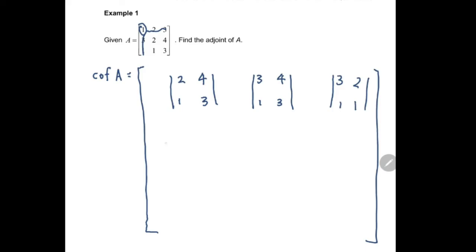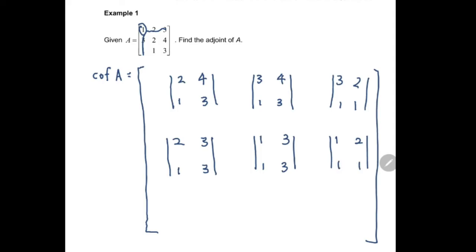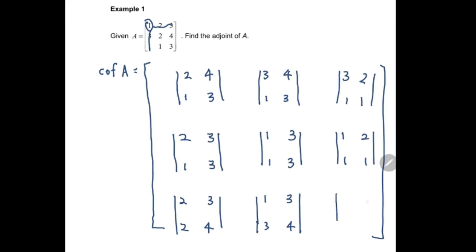Moving to the second row: the submatrices are [2, 3; 1, 3], then [1, 3; 1, 3], and then [1, 2; 1, 1]. For the last row, the submatrices are [2, 3; 2, 4], then [1, 3; 3, 4], and then [1, 2; 3, 2].